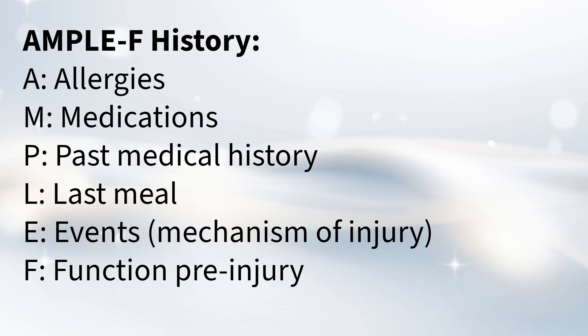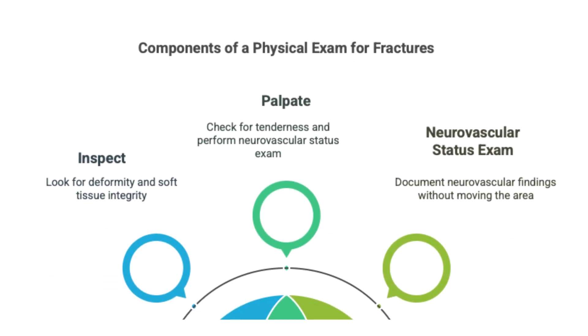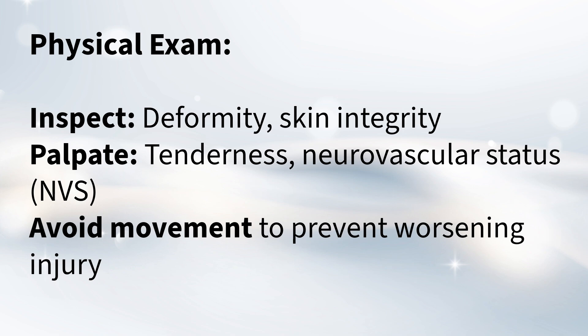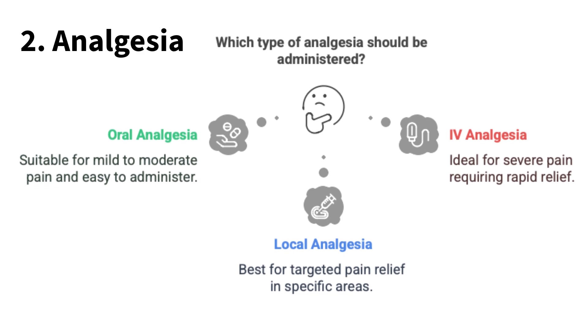Then there's the physical exam, where the doctor will carefully look at the injured area for any deformities or skin problems, and gently feel for tenderness. An important point is documenting the neurovascular status — checking for nerve function and blood flow to the injured limb before moving it around too much, to establish a baseline. And after all that, pain management — analgesia — is a huge priority, done in several ways.